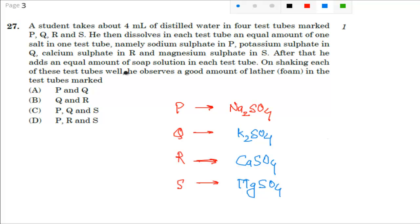On shaking each of these test tubes well, he observes a good amount of lather in the test tube. So a good amount of lather or foam will only form when the hardness or the ions responsible for hardness are not present in that particular test tube.